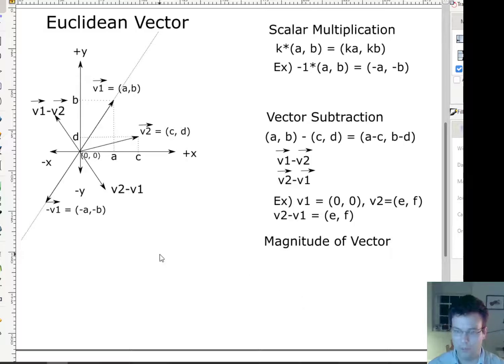Okay. So one last thing I want to talk about here, which is the magnitude of the vector. So the magnitude is just another word for the length of the vector. And so let me draw a vector here. And so the vector is going to have the coordinates a along the x-axis and then b along the y-axis.